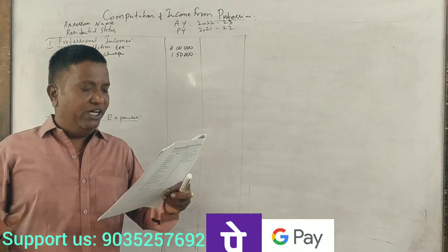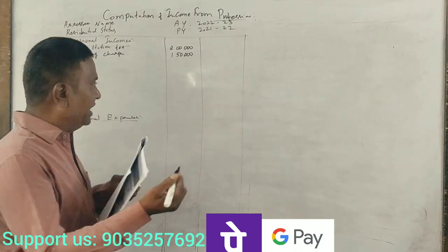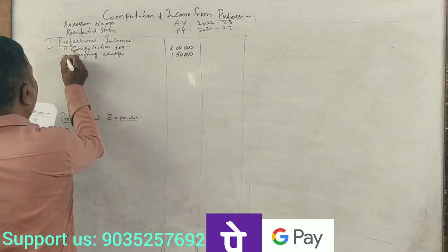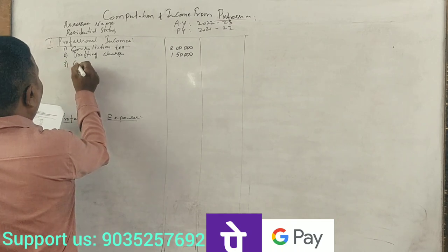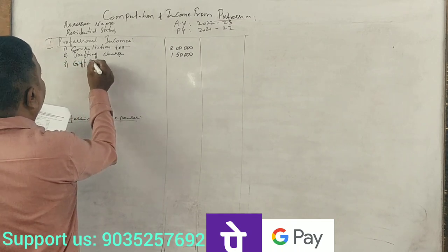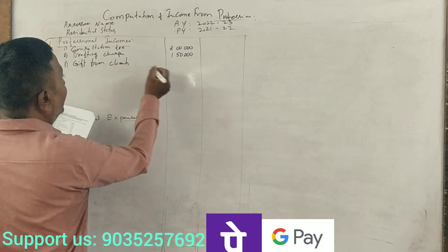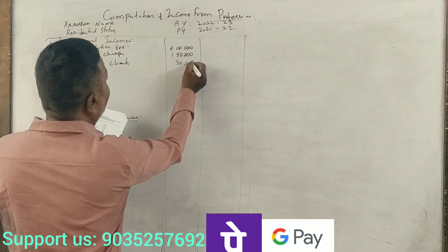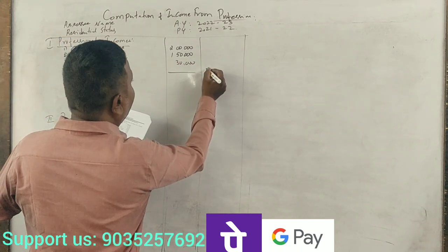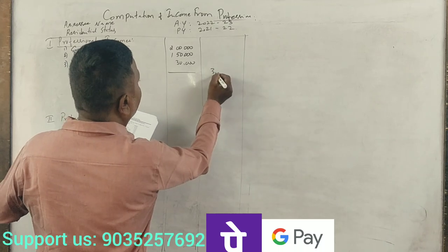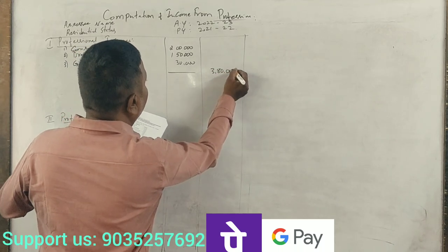Next item, gift from clients. Gift from clients is $30,000. So the total receipts are $380,000. Next, we'll look at expenses.